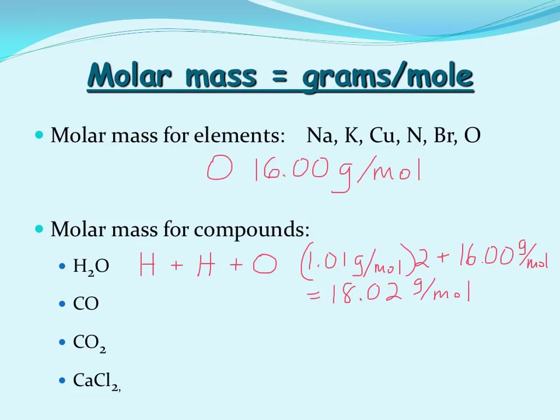Again, we use water a lot in chemistry. That's a good one to memorize. The next one is carbon monoxide, made up of one carbon with a mass of 12.01 grams per mole and oxygen at 16.00 grams per mole. The sum total of that would be 28.01 grams per mole.